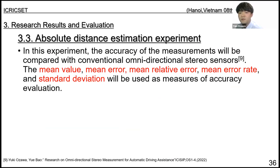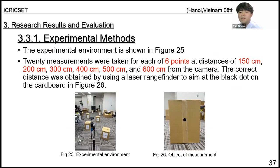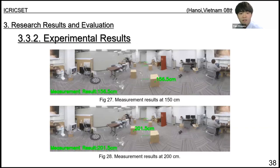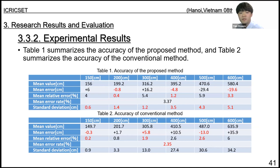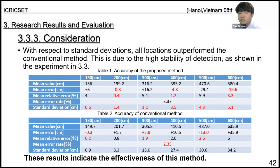Next, we discuss the absolute distance estimation experiment, in which the measurement accuracy is compared with conventional omnidirectional visual sensors. The experimental environment is shown in Figure 25. Twenty measurements were taken for each of 6 points, from 150 cm to 600 cm. Table 1 summarizes the accuracy of the proposed method and Table 2 summarizes the accuracy of the conventional method, with items of superior accuracy highlighted. The proposed method outperformed the conventional method at all locations in terms of standard deviation, due to the high stability of detection shown in the previous experiment. These results indicate the effectiveness of this method.